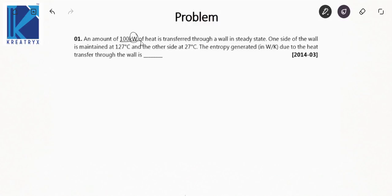One side of the wall is maintained at 127 degrees Celsius, that is 400 Kelvin, and the other side of the wall is maintained at 27 degrees Celsius, that is 300 Kelvin. The entropy generated due to the heat transfer through the wall — let me draw a rough wall.